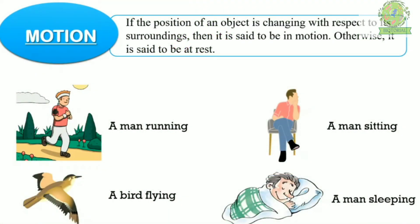Let's start with motion. The definition: if the position of an object is changing with respect to its surroundings, then it is said to be in motion; otherwise it is said to be at rest. The key point here is that the surrounding must remain at the same place — the surrounding does not change.